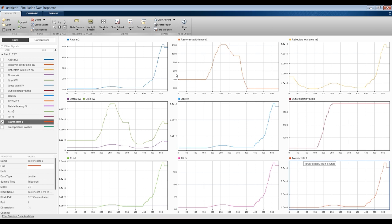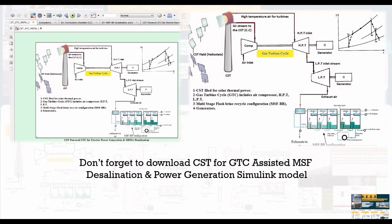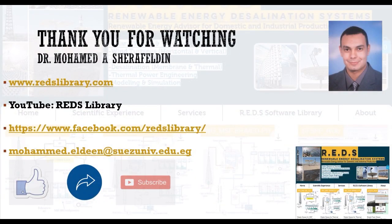You can go to the working space and connect the model. Don't forget to download our CST model — the solar tower for gas turbine cycle assisted multi-stage desalination. We have this gas turbine cycle powered by solar CST, and we can attach the steam source from the low-pressure turbine to the brine heater of the desalination system. It's a very interesting model. Don't forget to like, share, and subscribe. Thank you very much for watching.